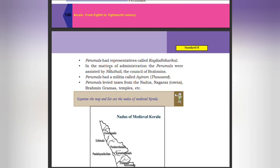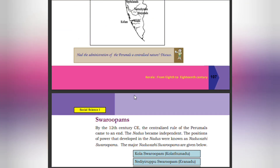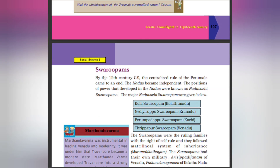Let us examine the characteristics of the rule of the Perimars. Perimars had representatives called Koiladi Karigal in matters of administration. The Perimars were assisted by Nalutali, the council of Brahmins. Perimars had a militia called Iram Thousand. Perimars levied taxes from the nadus, nagaras, Brahmin gramams, temples, etc. By the 13th century CE, the centralized rule of the Perimars came to an end and the nadus became independent.